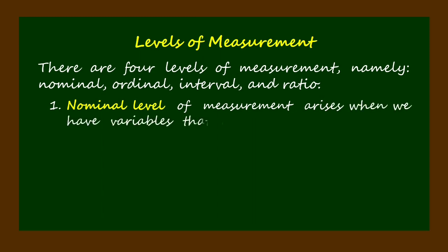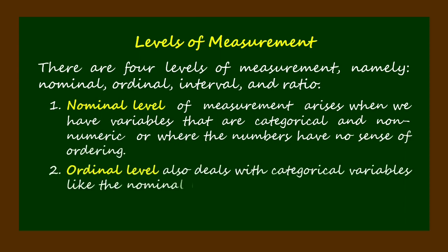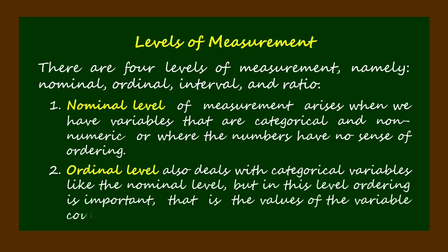Nominal level of measurement arises when we have variables that are categorical and non-numeric, or where the numbers have no sense of ordering. Ordinal level also deals with categorical variables like the nominal level, but in this level ordering is important—that is, the values of the variable could be ranked.